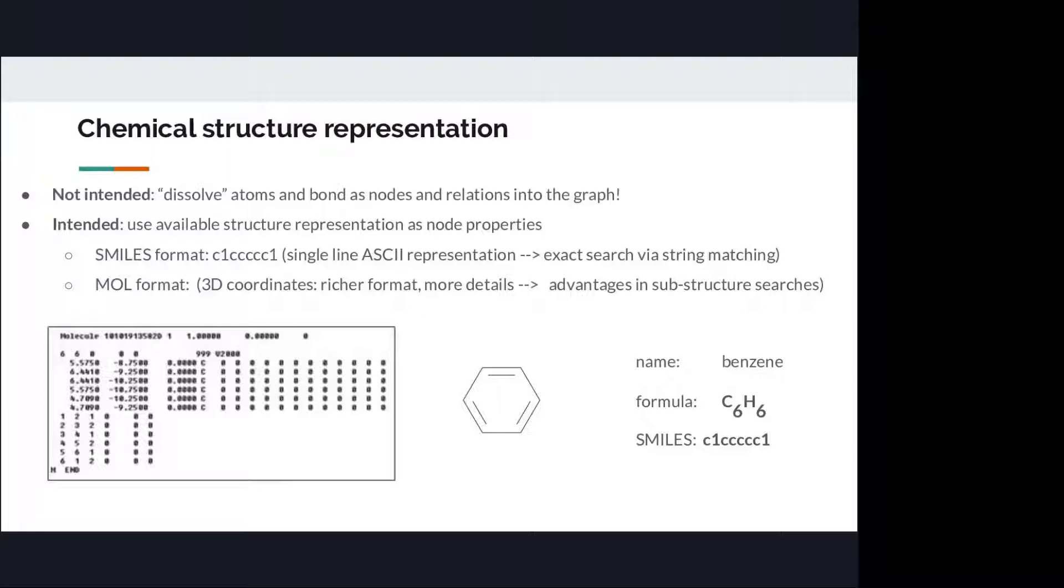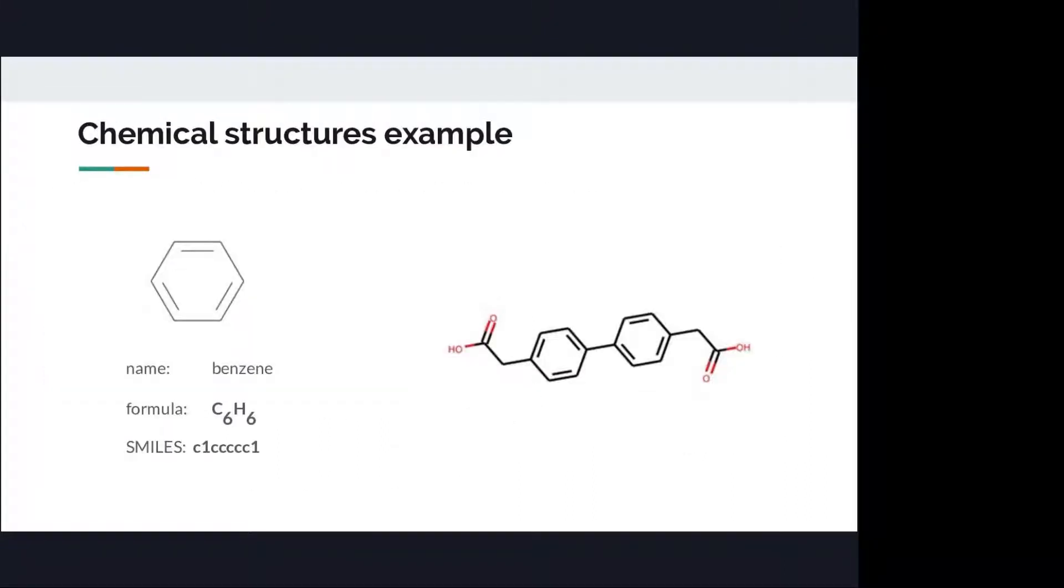While Mold format contains more information, it is a three-dimensional description of your molecule. It determines coordinates of your specific atoms, types of bonds and other information. Those advantages will be useful during substructure search. Actually, Mold format will be useful for you to deal with molecules that do have chirality property.